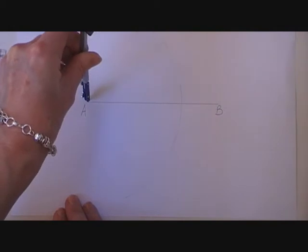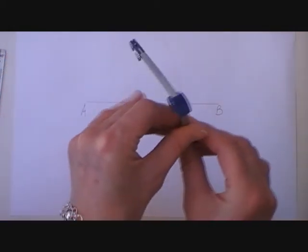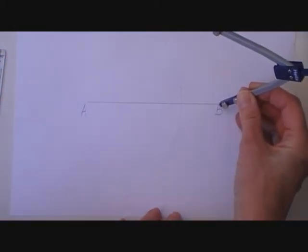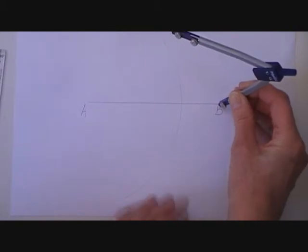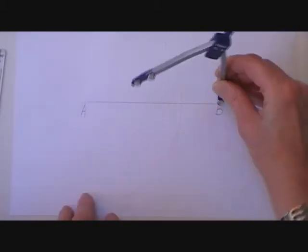An arc is part of a circle. I'm going to take the tip of the compass and place it on B. Note the radius is the same length.